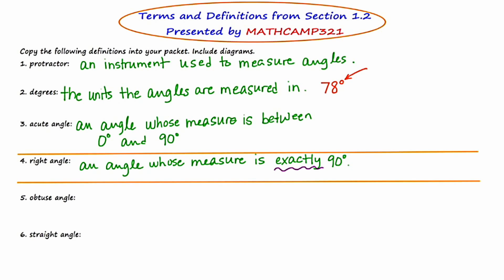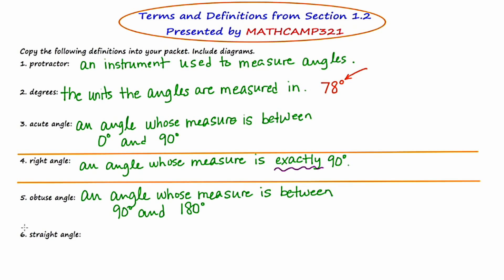The next term is obtuse angle. An obtuse angle is an angle whose measure is between 90 degrees and 180 degrees. Finally, we have the term straight angle. A straight angle is an angle whose measure is exactly 180 degrees.